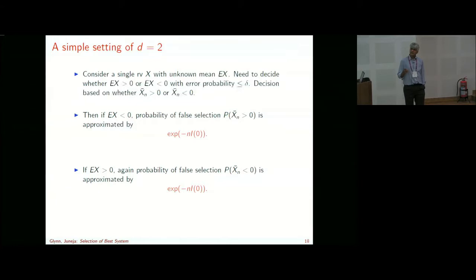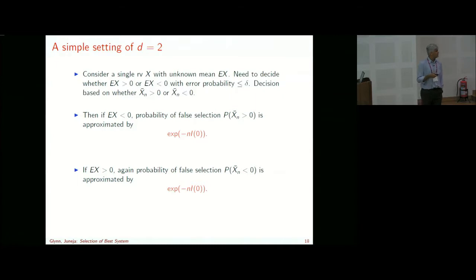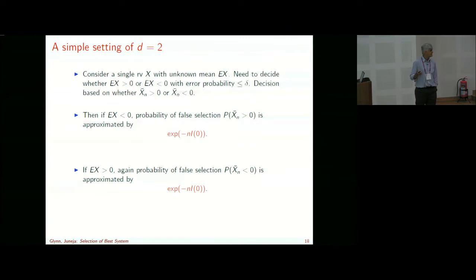Now we discuss estimation of I(0). The rate function at zero is the Legendre-Fenchel transform evaluated at zero — simply the negative of the infimum of the log moment generating function. Pictorially, the log MGF is a convex function; assuming the mean is negative the slope is negative there, and I(0) is its minimum value. We generate samples X_i, i = 1 to m, compute the empirical log MGF, take its minimum, and that's our estimator. If the sample was bad — sample average turned out positive instead of negative — we get a different shape, but both come from the empirical moment generating function.